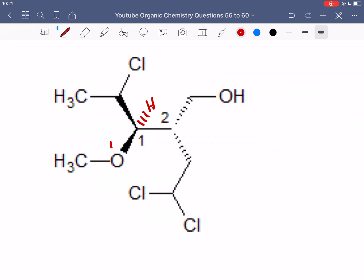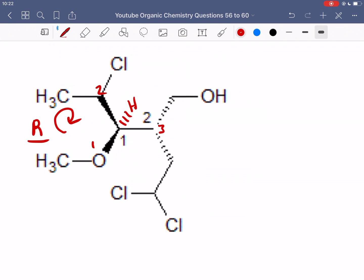So the highest priority group is going to be, first of all, this oxygen. And then next we have two carbons, but the carbon on the left is connected to a chloride. Therefore, it's going to be second priority, whereas this carbon on the right is connected to other carbons. So here are our priorities, and then we see that this one is going clockwise, and our lowest priority is in the back. So carbon 1 is R.